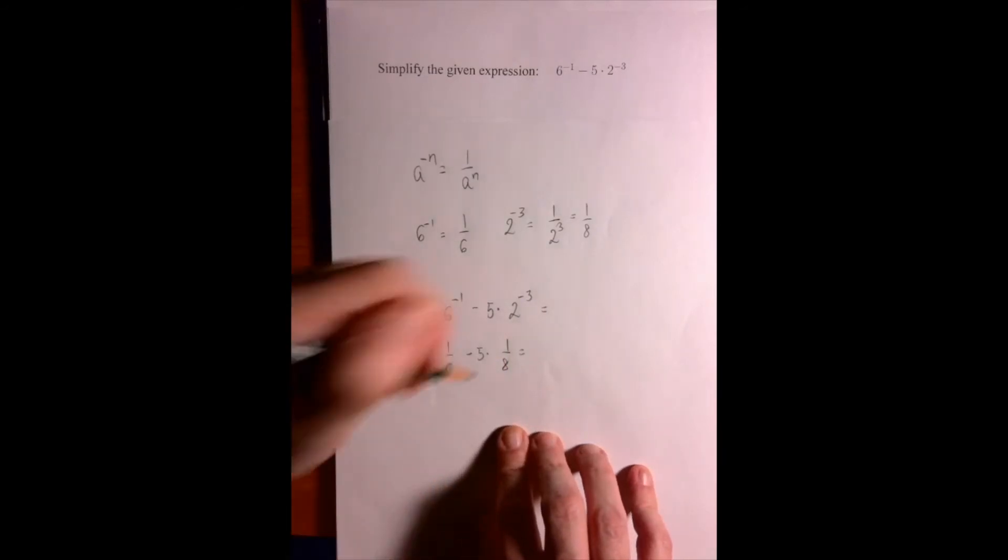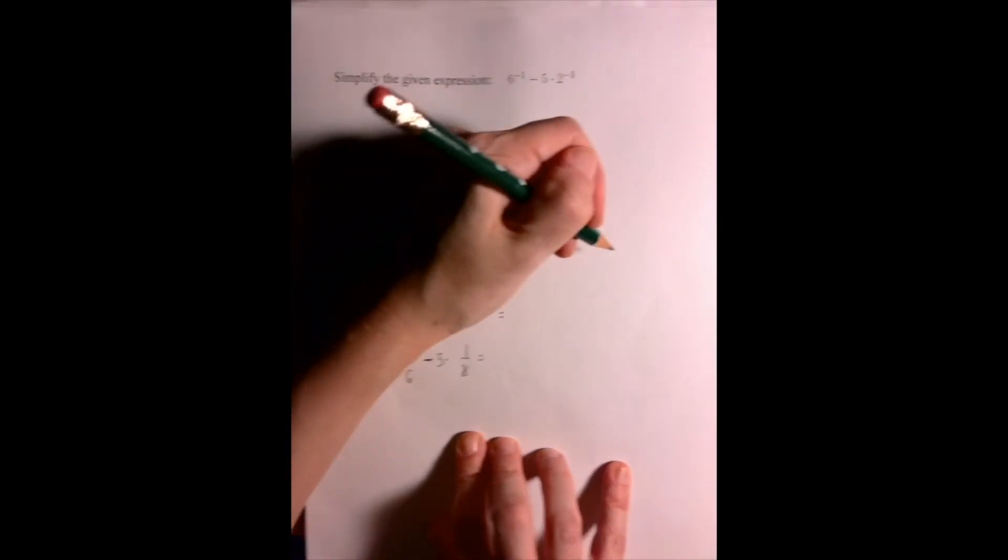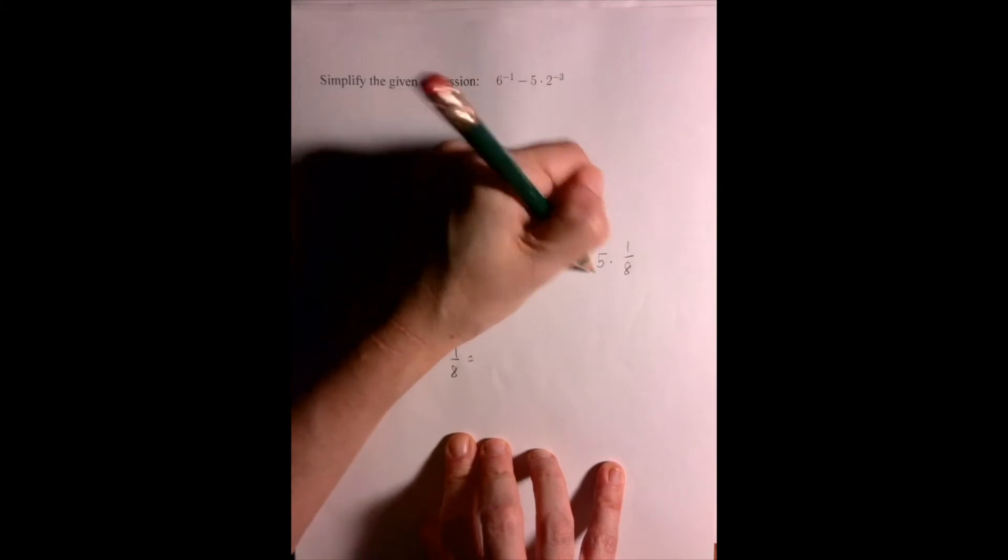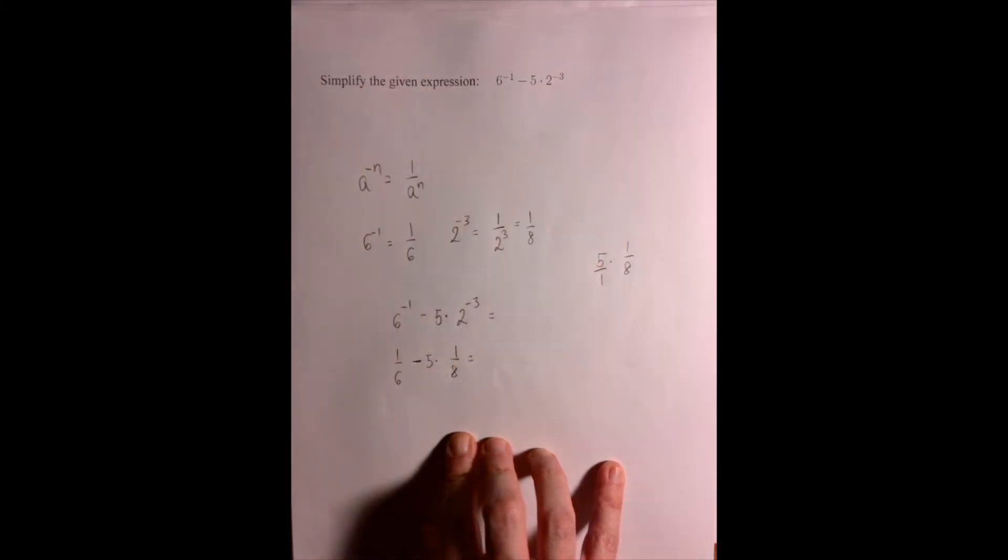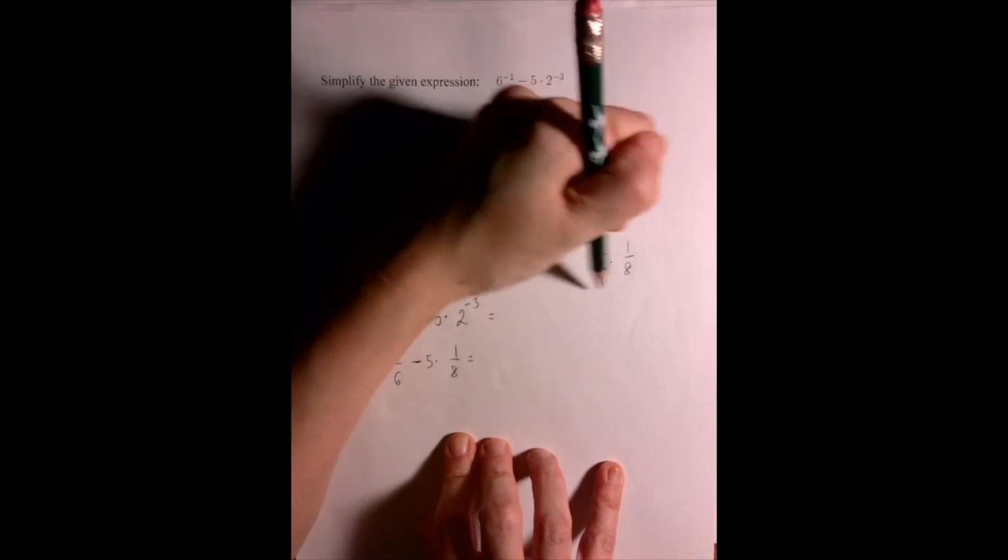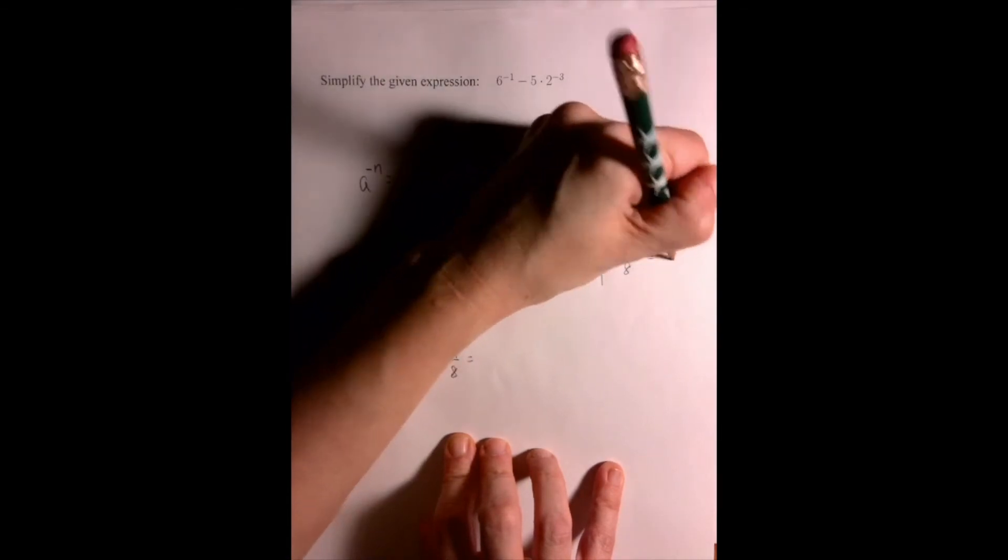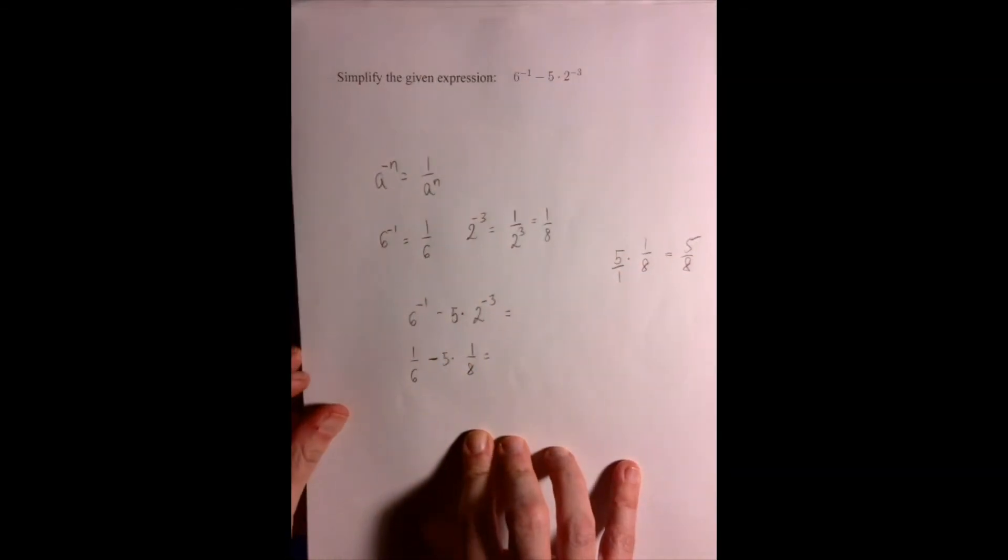The multiplication comes first. 5 times 1 over 8, we can work it out in the margin if needed. We can make any integer a fraction by adding a 1, and then top by top, bottom by bottom, but either way, it's 5 over 8.